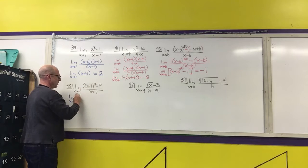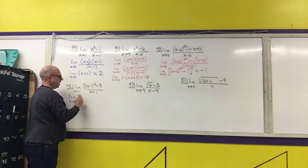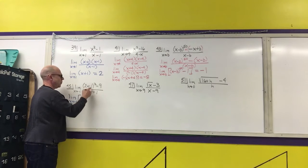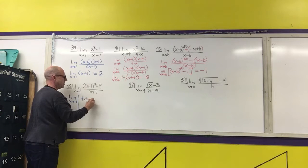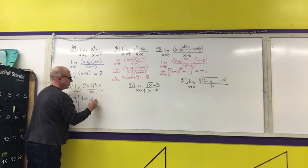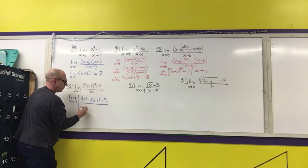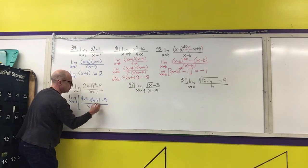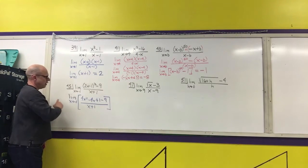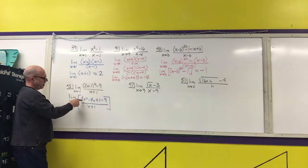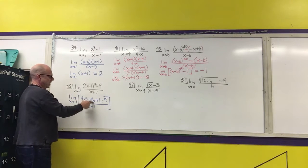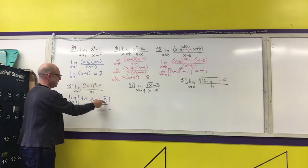2x minus 1 squared is 4x squared minus 4x plus 1. And then I have the minus 9 over the x plus 1.